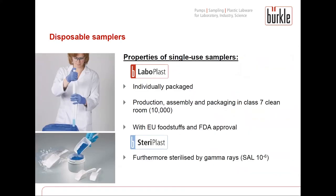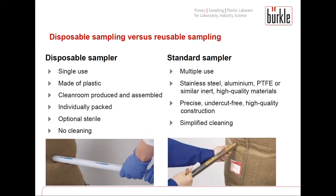Disposable samplers fulfill special requirements. They are produced in cleanroom class 7, individually packaged and available sterilized. Büeckle offers two different versions: Laboplast, which is cleanroom produced, individually packaged and complies with EU foodstuff and FDA requirements; and the Stereoplast version, which is furthermore sterilized by gamma rays. The main differences are that disposable samplers are for single use, made of plastic, produced in cleanroom, individually packaged, optionally sterilized, and require no cleaning after use.